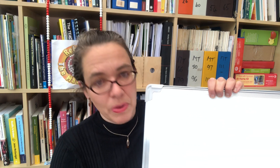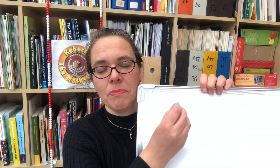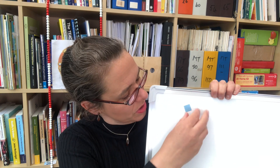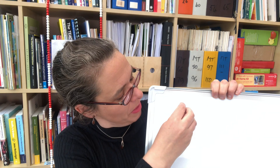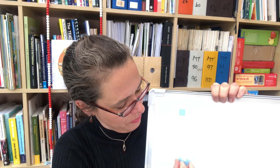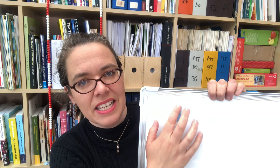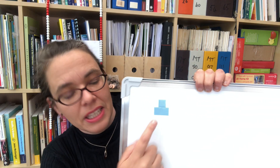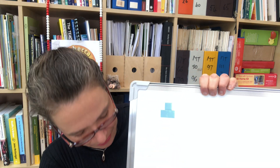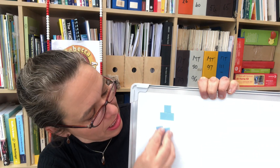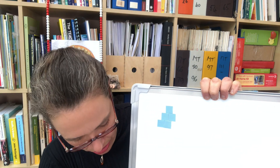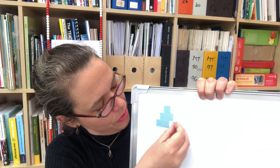For triangular numbers we could do this with circles, board magnets, squares, or dots drawn on paper. Our first triangular number is just one, and with triangles each subsequent row has one more object in it. So there's our second triangular number which is three. Our third triangular number will have a third row of three squares.